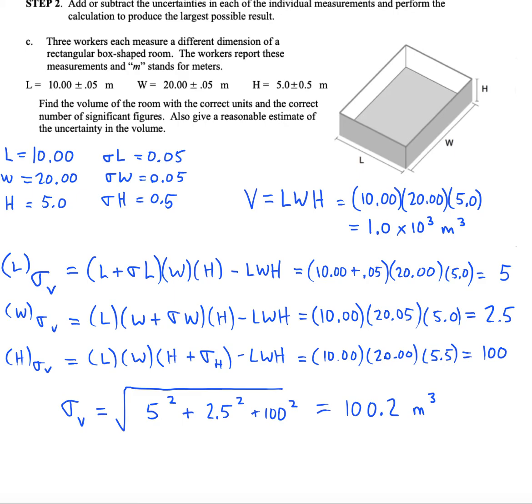So when we go to write our final answer, we want to take our best estimate from before and we'll start off with that. We'll put plus or minus the uncertainty that we found from the quadrature. Now we don't want to give too much information here. I'm just going to round my uncertainty to one sig fig, which is typical. Maybe two sig figs, but no more than two generally. So let's make it 1.0 times 10 to the third plus or minus 100 meters cubed.